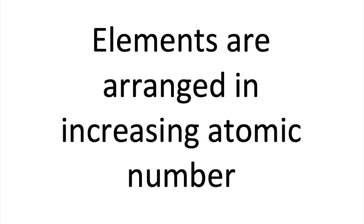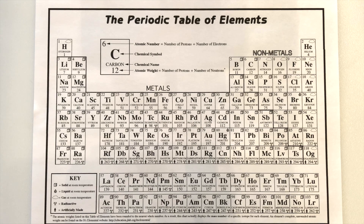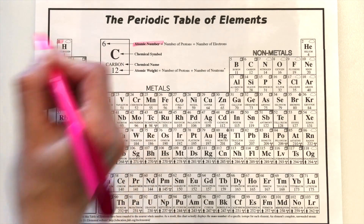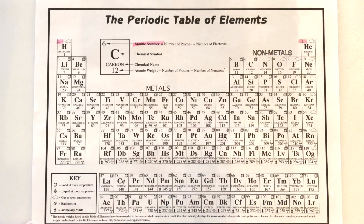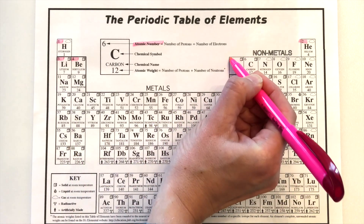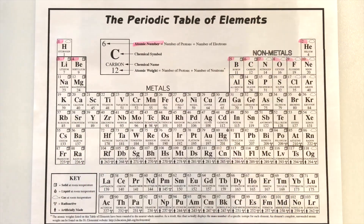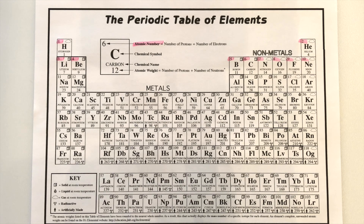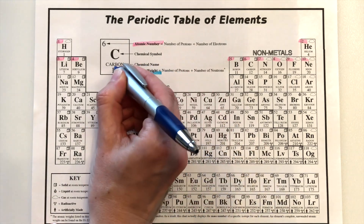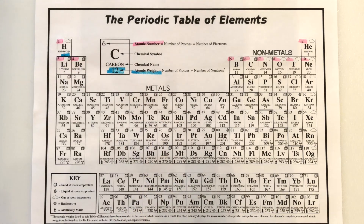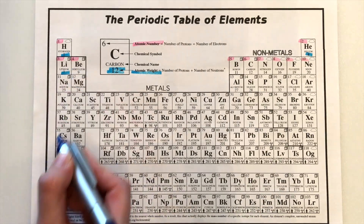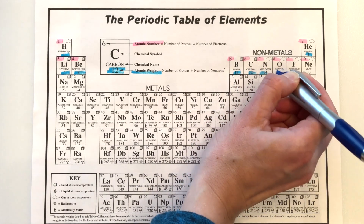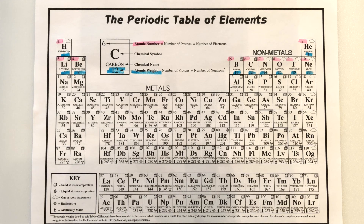Today I'm going to talk about trends on the periodic table. The first thing to notice is that all elements are arranged in increasing atomic number — hydrogen has atomic number one, helium two, lithium three, beryllium four, and so on. The second trend is that all elements are arranged in increasing atomic mass — hydrogen has one, helium four, lithium seven, beryllium nine, and so on.